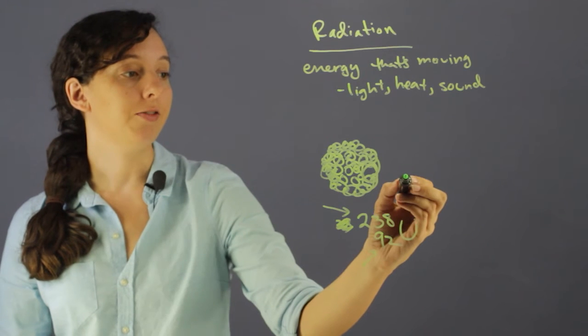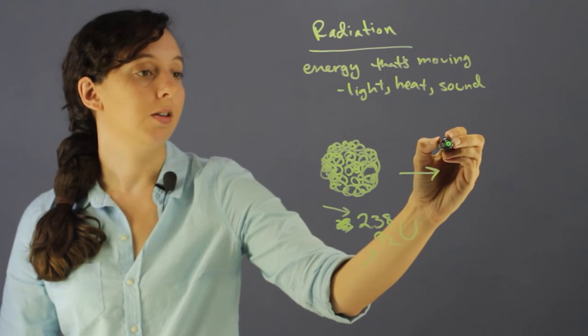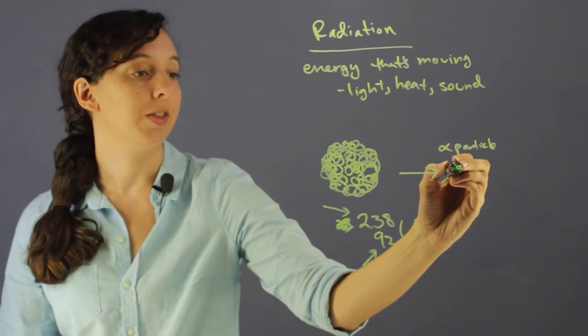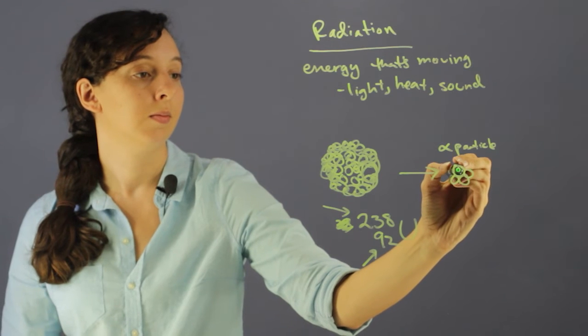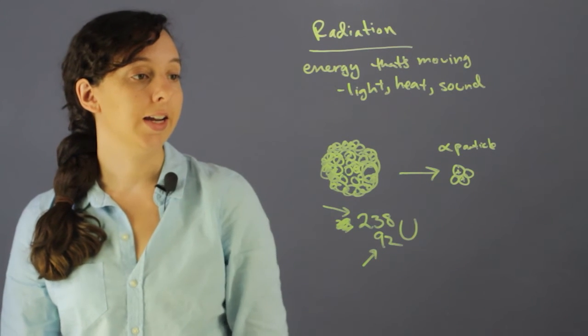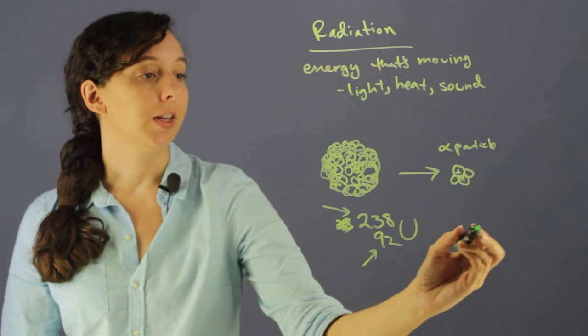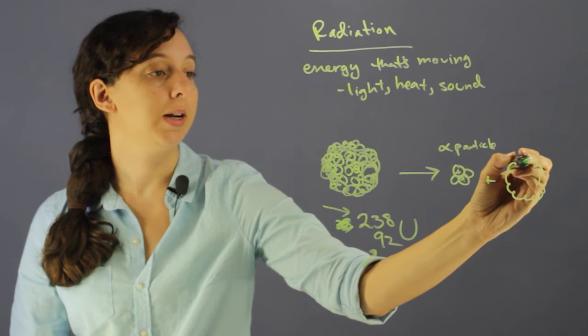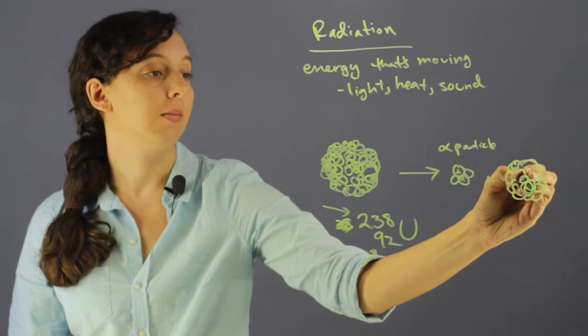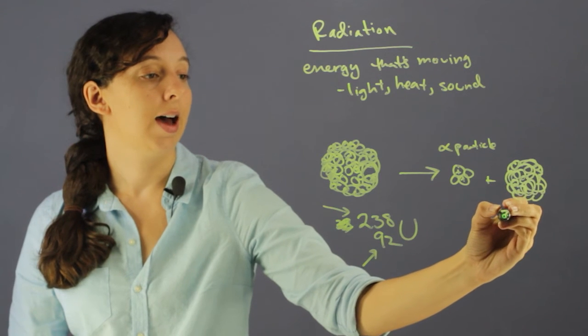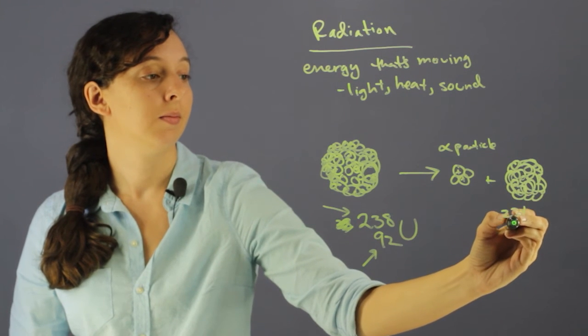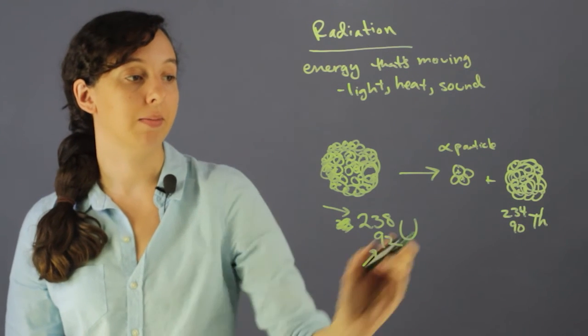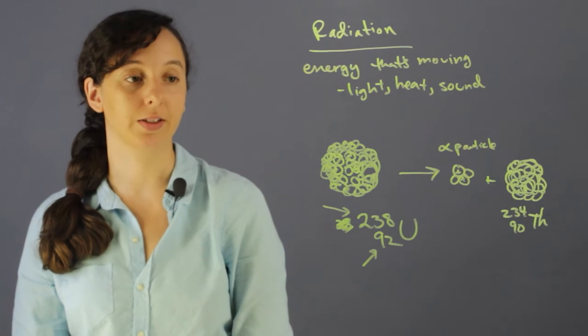And when it undergoes alpha decay, it makes an alpha particle, which is just the same thing as the helium nucleus. And what's left over is a new, still big, but slightly less big atom that has 234 and 90 for its mass number and atomic number respectively.